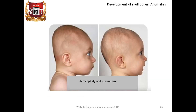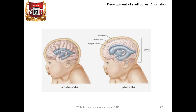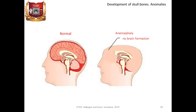And now we are going to speak about anomalies. Acrocephaly is an abnormal elongated, towered head shape caused by premature fusion of the coronal suture. Microcephaly is a significant decrease in the size of the skull and the brain with normal sizes of other parts of the body; it is accompanied by mental disability. Hydrocephaly is a violation of the normal development of the brain associated with excessive accumulation of fluid in it. Anencephaly is a severe malformation involving complete or partial absence of the cerebral hemispheres, cranial bones, and soft tissues.